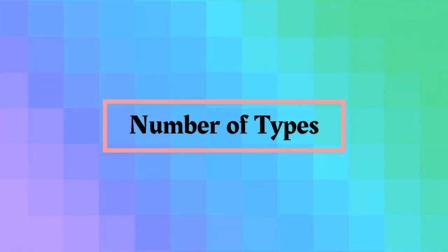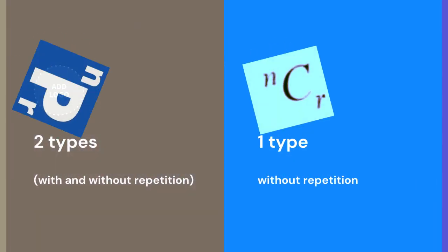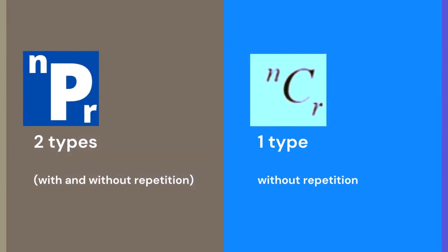The next thing is the number of types of formulas. Permutation has two formulas which are with and without repetition. But combinations has only one formula which is without repetition.